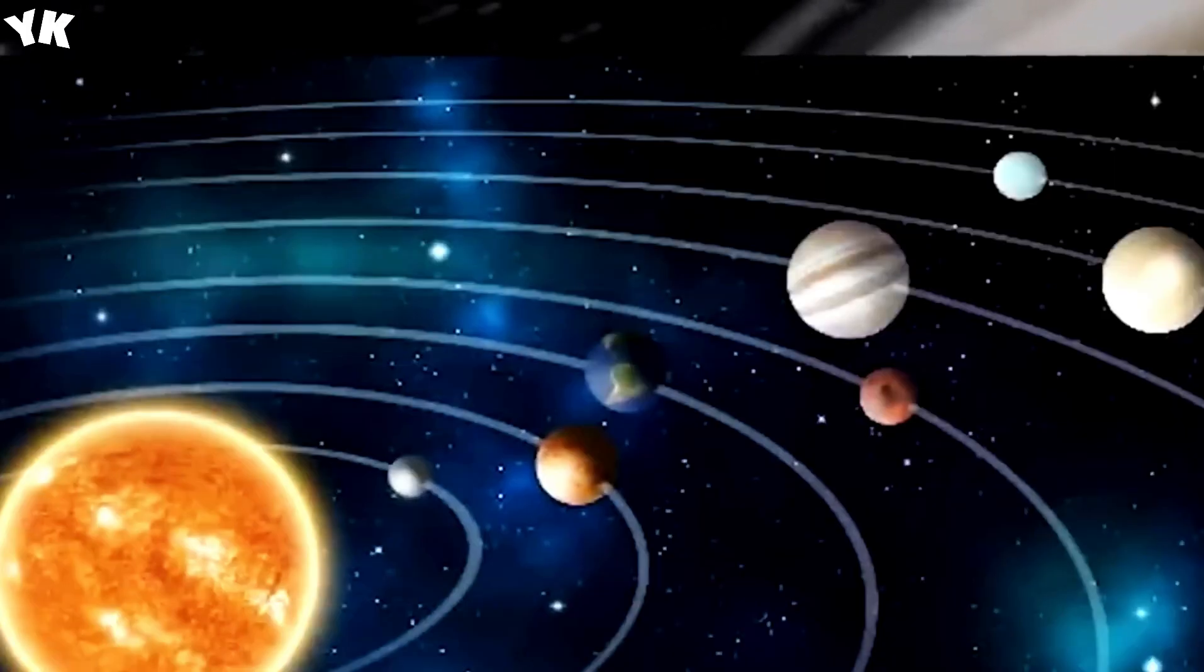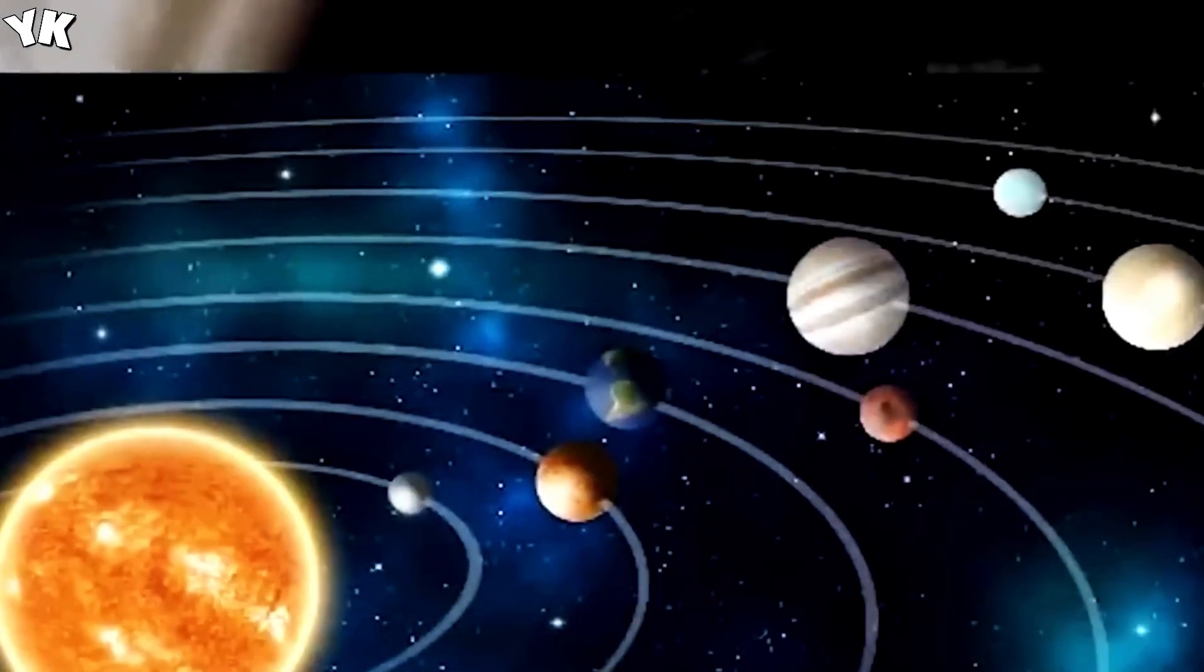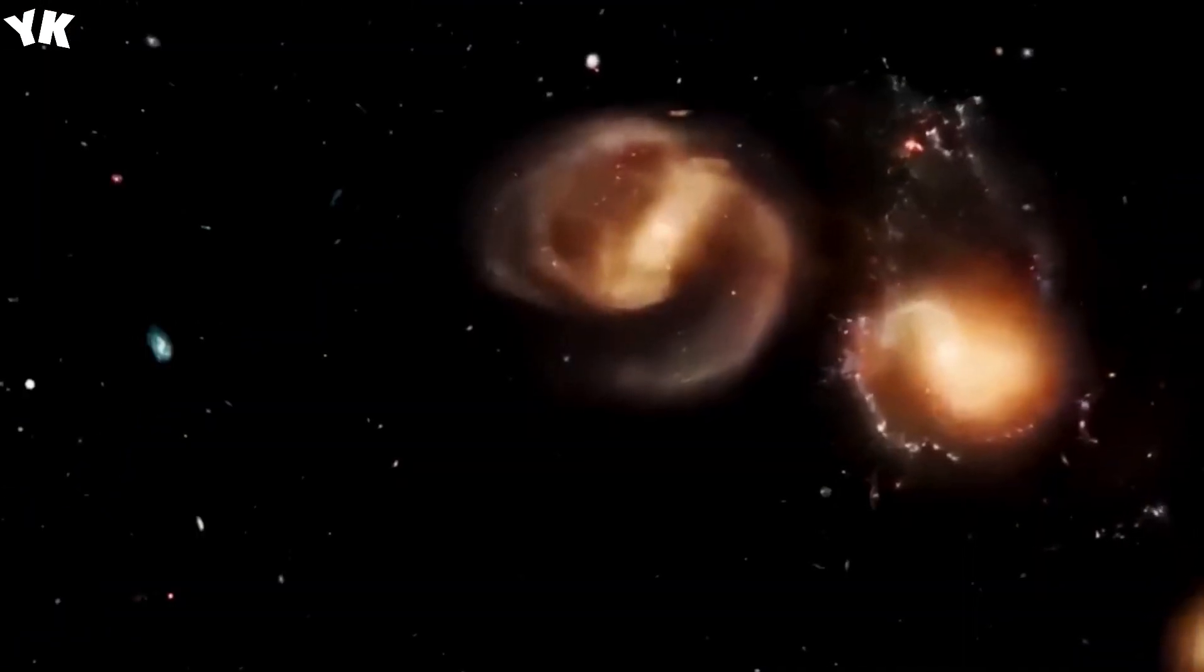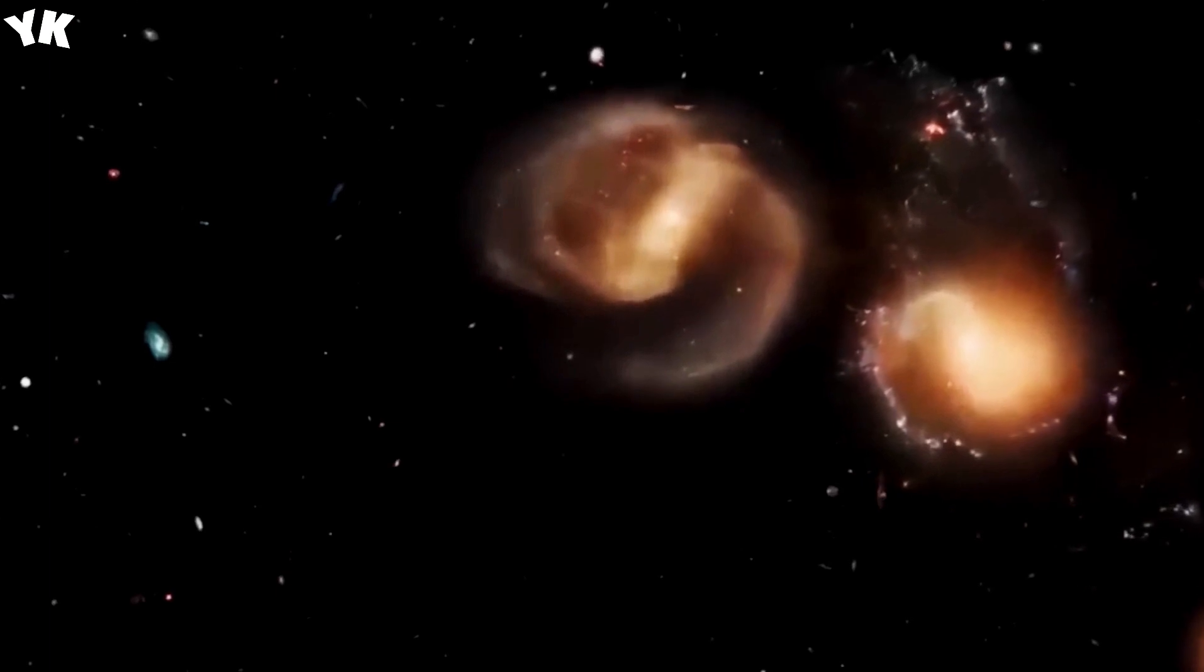Despite appearances, if the Milky Way and Andromeda were to collide, the Milky Way might not necessarily suffer more damage. This is due to the presence of dark matter, which surrounds our galaxy in a vast cloud measuring up to 2 million light years across. Although dark matter is invisible and only detectable through its gravitational effects, it plays a crucial role in the evolution and structure of the universe.